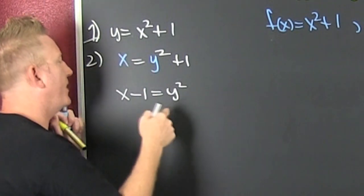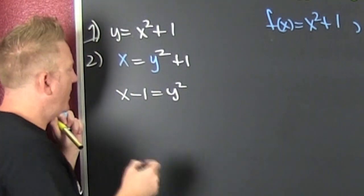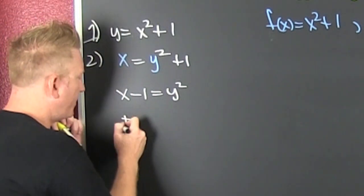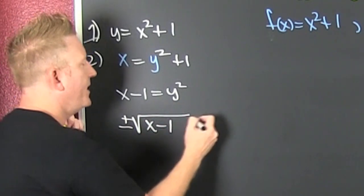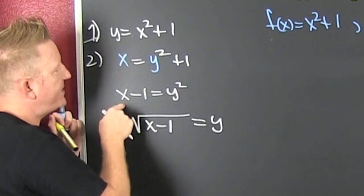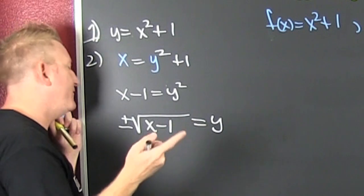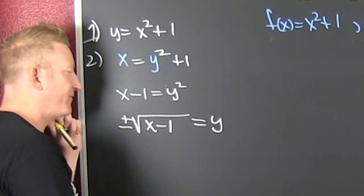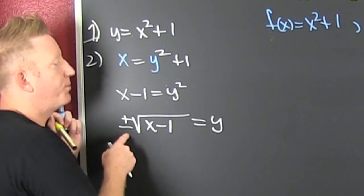Now I take the square root of both sides, but I'm not going to forget the plus and minus. So that's plus and minus the square root of x minus one is equal to y, because whenever I take the square root of a square you get the absolute value, which is where the plus and minus come from.